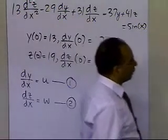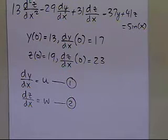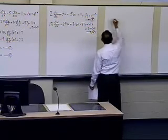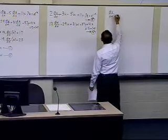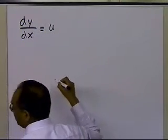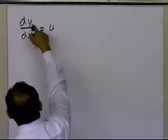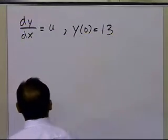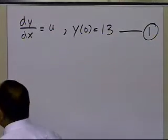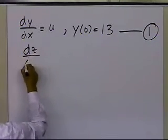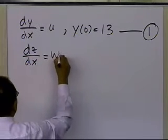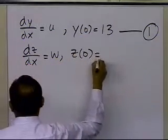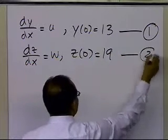So I'm going to rewrite my equations now. My first equation: dy by dx equal to u. This is my first differential equation, for which I need an initial condition on y — y sub 0 is equal to 13, which is given to me. Now the second equation is dz by dx is equal to w, and I'll need the initial condition on z — z of 0 is already given to me as 19. That becomes my second differential equation.